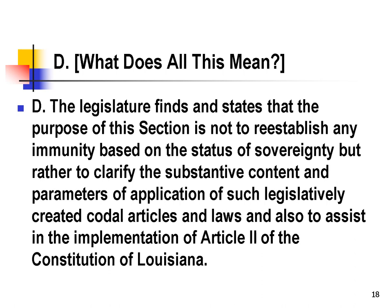The legislature is telling us that this is not intended to reestablish any immunity based on the status of the sovereign, but really to clarify the substantive content parameters of the application of such legislatively created code articles. What it's really telling us is that its legislative purpose is not to reinstitute sovereign immunity. So when the courts are construing this statute, they're supposed to construe it within the context of the state policy not being to have sovereign immunity. That means the legislature will construe it narrowly to find liability whenever possible.